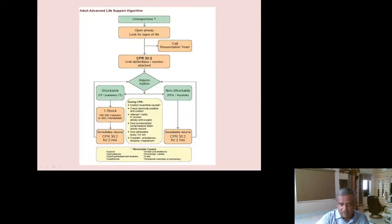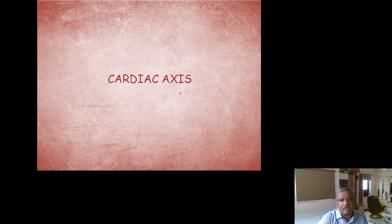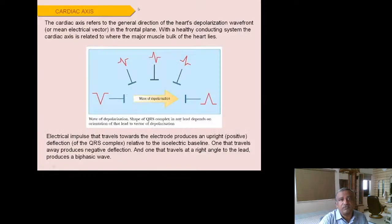Cardiac axis refers to the general direction of the heart's depolarization wavefront in the frontal plane. Clinically, you need to know left axis deviation (LAD) and right axis deviation (RAD). With a healthy conduction system, the cardiac axis relates to the major muscle bulk. An impulse traveling towards an electrode produces an upright deflection; away produces a negative deflection; perpendicular produces an isoelectric, isophasic deflection where positive and negative are equal.